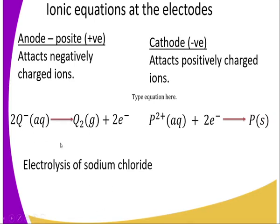In the illustration, we use Q to stand for an anion, which is oxidized to a gas, and there is a release of two electrons according to this illustration. This may vary due to the valency of the anion. At the same time, the cathode, which is the negative terminal, attracts the positively charged ion. In this illustration we use a cation P, which does not stand for any specific element. It gains two electrons and is reduced to P atom or P metal, and this makes the solution decompose.